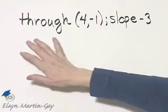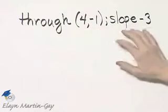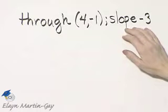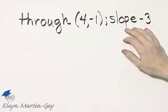We want to write an equation of the line that goes through this point and has this slope. And don't forget, we're going to write our line in standard form.